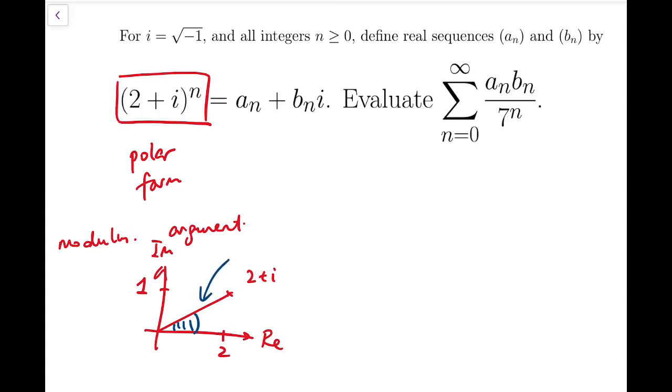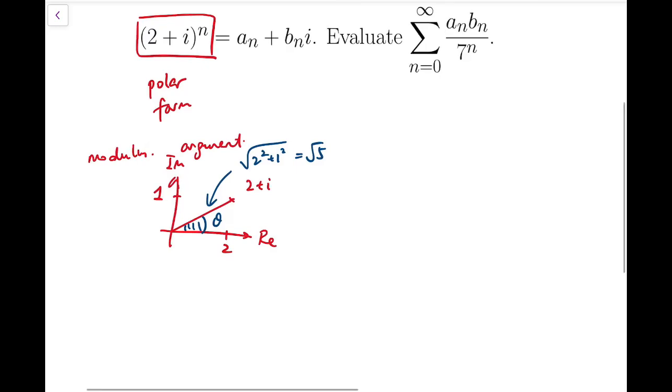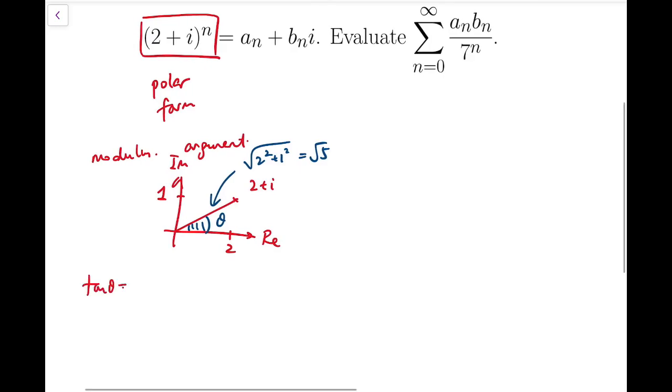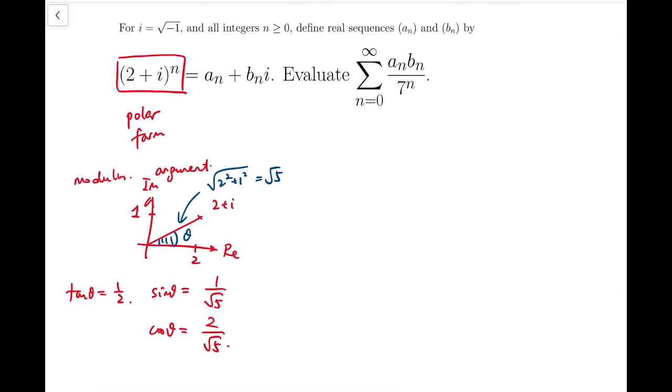The modulus equals √(2²+1²) = √5. The argument is defined by tan(θ) = 1/2. Similarly, sin(θ) = 1/√5 and cos(θ) = 2/√5. That's the polar form.